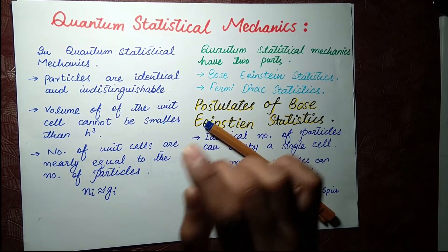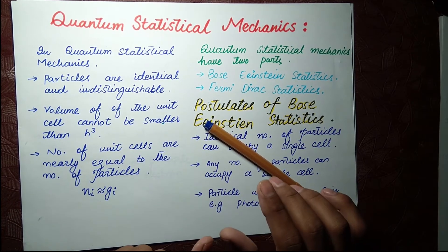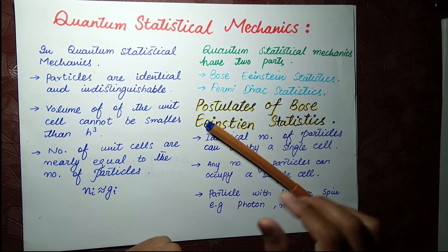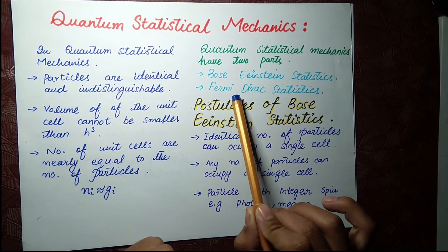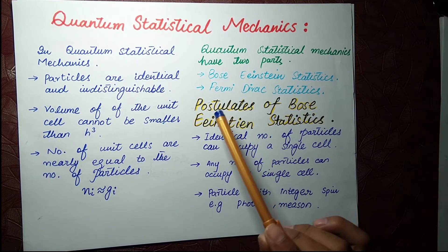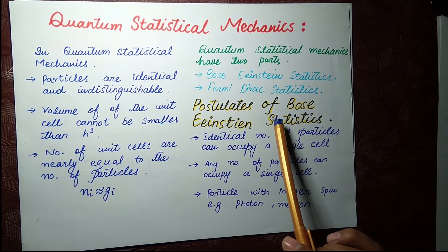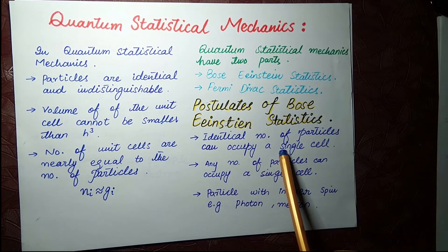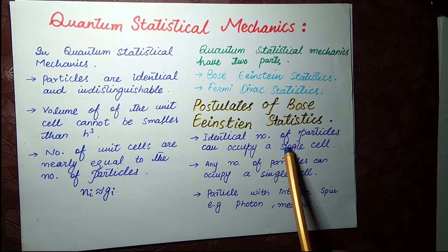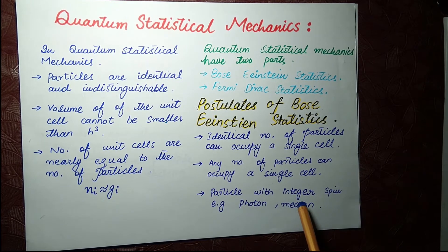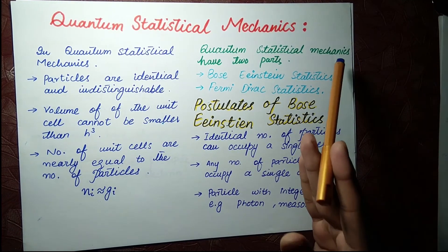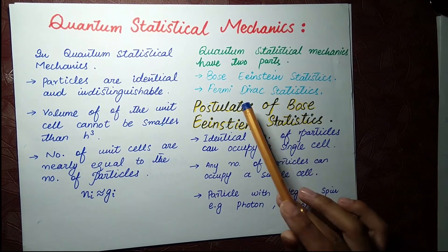In quantum statistical mechanics we have two main parts: first is Bose-Einstein statistics, and second is Fermi-Dirac statistics. The postulate of Bose-Einstein statistics says that any number of identical particles can occupy a single cell. Bosons — like photons and mesons — have integral spin.